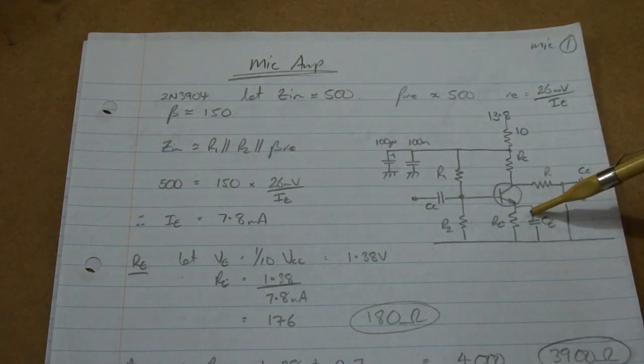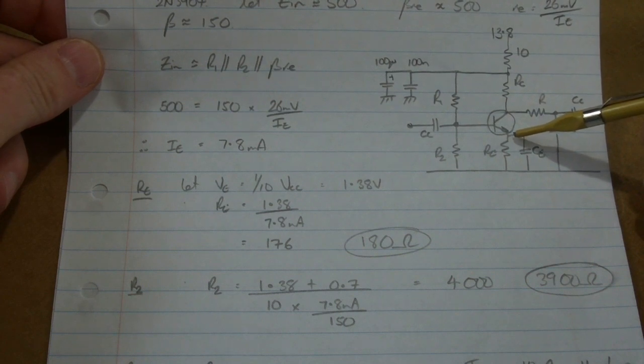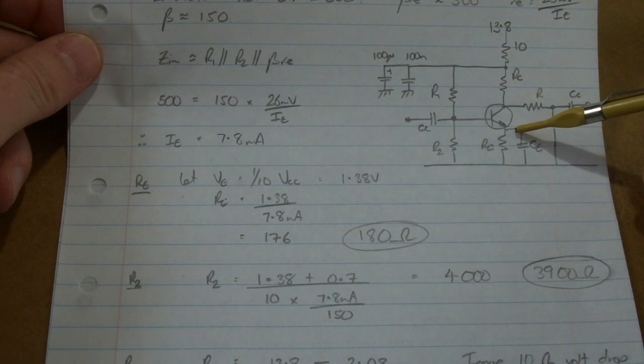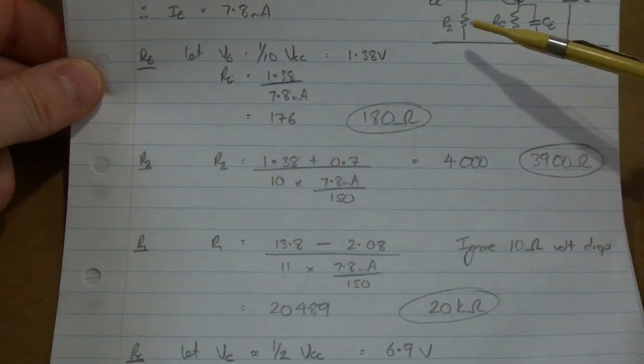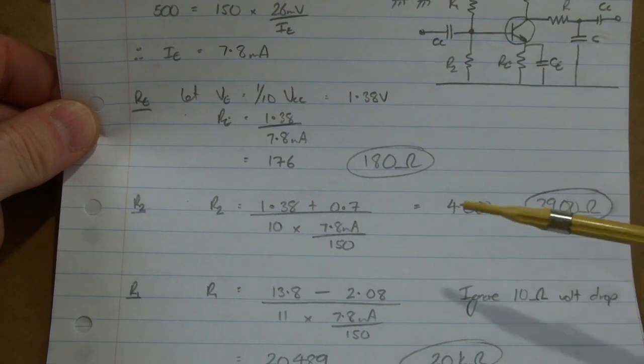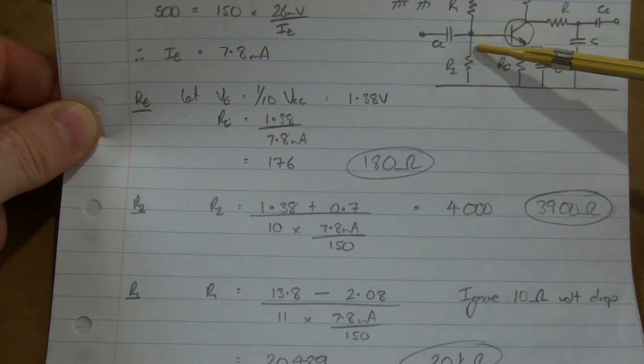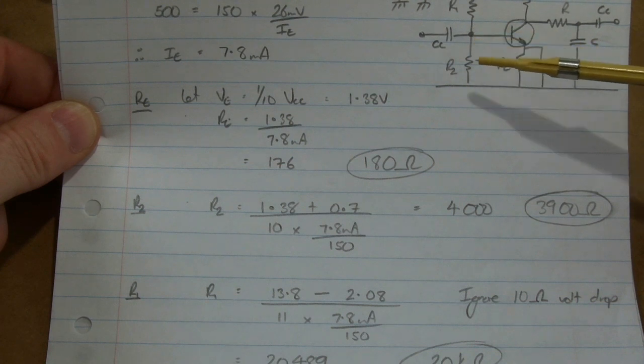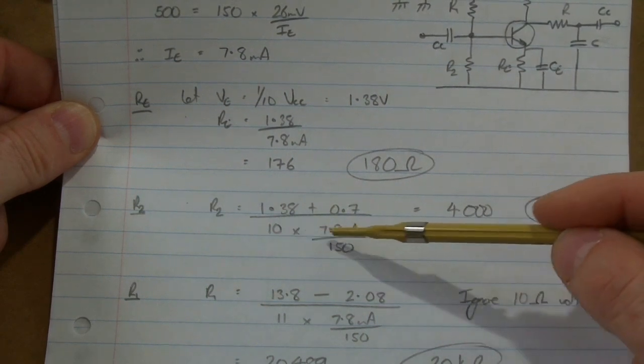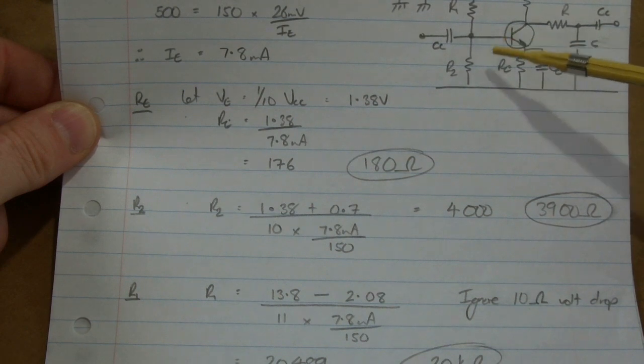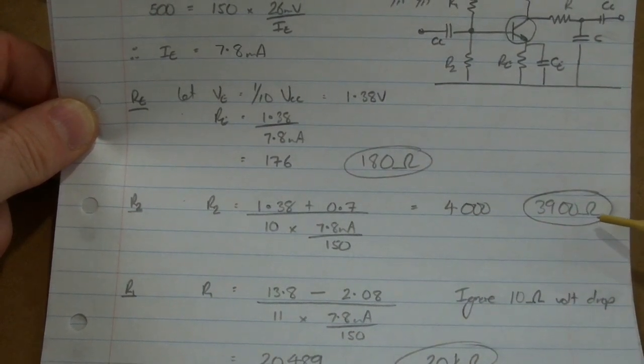So having known that, I can then start to work out the various components. So starting with our emitter resistor, again setting the emitter voltage to be a tenth of VCC, so roughly 1.38 volts. So 1.38 volts at 7.8 milliamps gives me 176, so I'll use 180 ohms. For R2, this one here, normal story, our voltage here plus 0.7, and then flowing through here we want 10 times the base current to make this voltage divided by us to be nice and stiff. So 7.8 milliamps divided by 150 will give us our base current, so 10 times that. So basically, 1.38 plus 0.7 divided by that current will give us a value of 4000 ohms, so we'll use the nearest standard value of 3900.